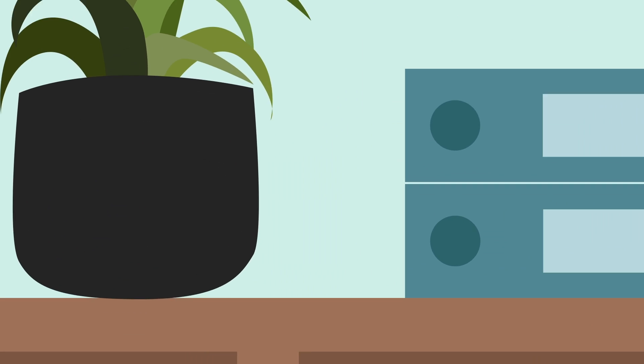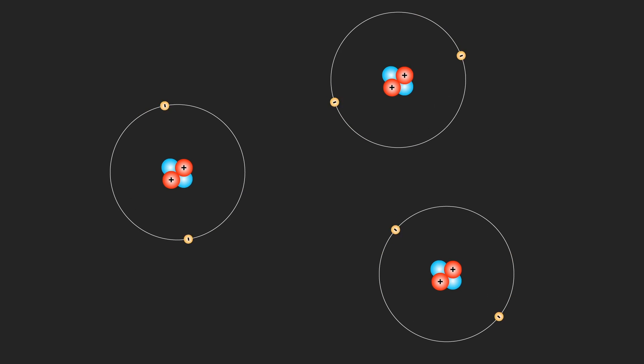Everything around us is made up of atoms with a nucleus of positive protons and neutral neutrons and orbiting negative electrons.